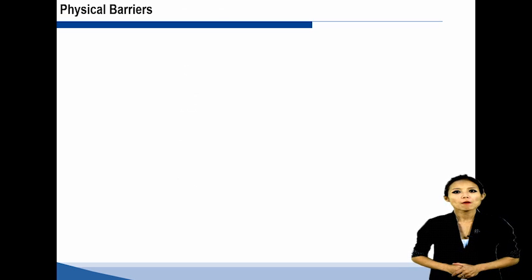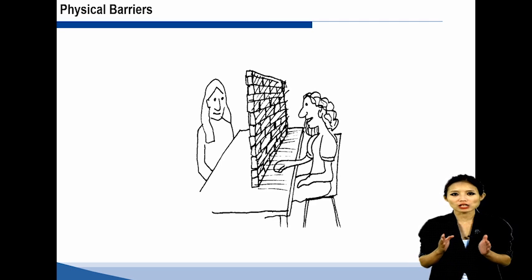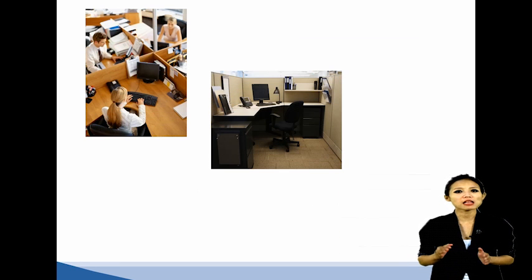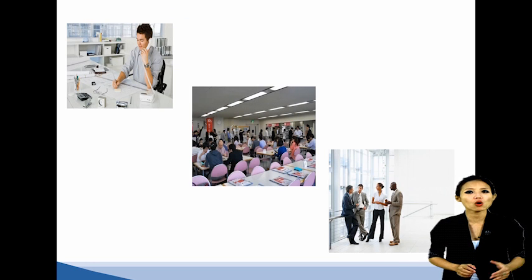Physical barriers: The first barrier to communication is the physical barrier. This means we are physically separated from the people in our organization. Some offices have separate cubicles for each employee while others are placed in a secluded office room. Other times the separation is much larger, since working from home has been a trend among companies. Also, if you have a very large office space, tables might be placed far away from each other, making it difficult to go out of your way just to talk to other employees.